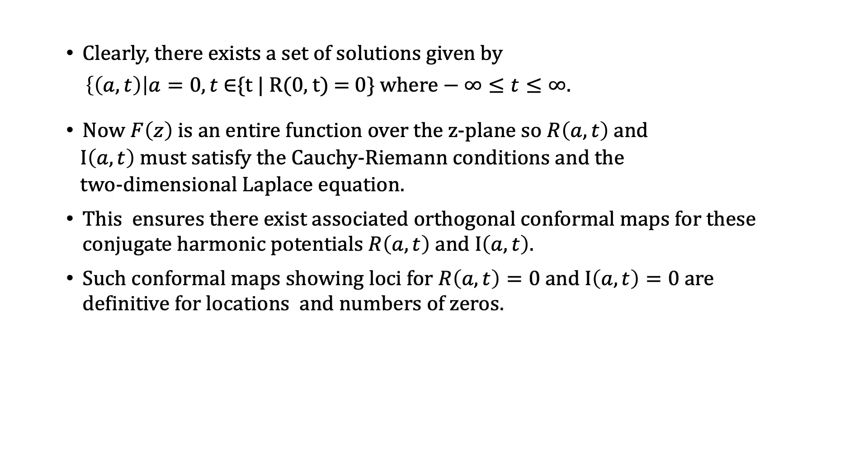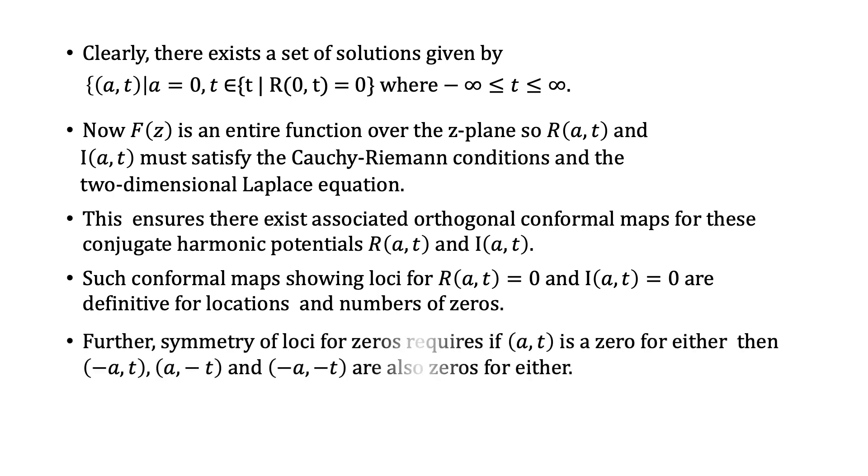It should be emphasized such maps are definitive for locations and numbers of zeros. Further, symmetry of loci for zeros require if (a,t) is a zero for either, then (-a,t), (a,-t), and (-a,-t) are also zeros for either.